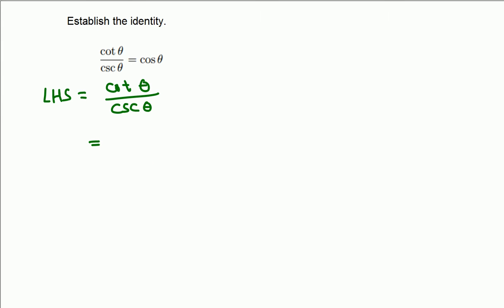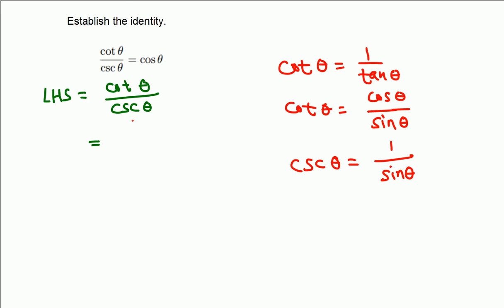Let's look at cotangent. We know that cotangent is the reciprocal of tangent: 1 over tangent. We also know cotangent is the ratio of cosine and sine: cosine theta over sine theta. And cosecant is the reciprocal of sine, so this is basically 1 over sine on the bottom.